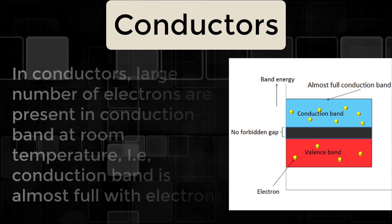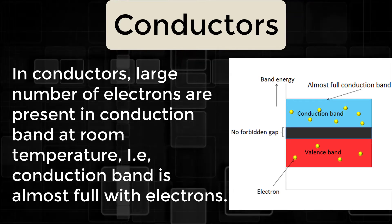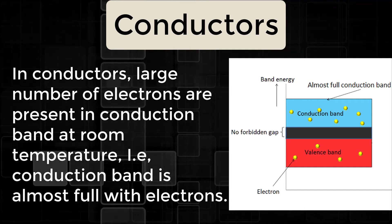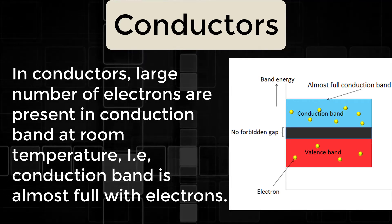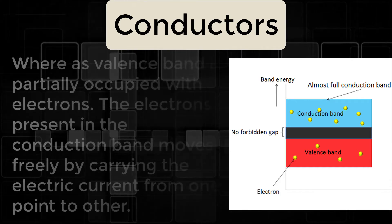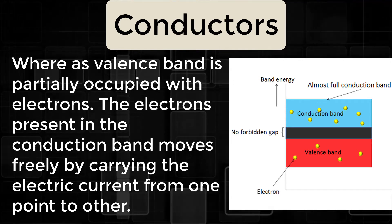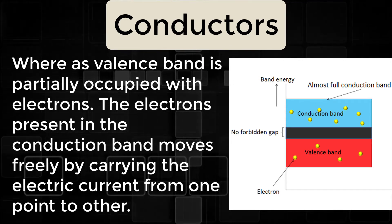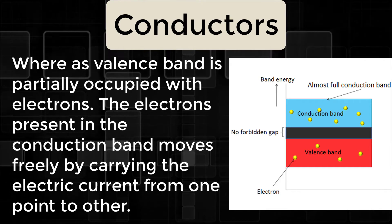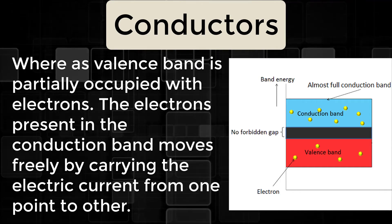In conductors, a large number of electrons are present in the conduction band at room temperature — that is, the conduction band is almost full with electrons. Whereas the valence band is practically occupied with electrons. The electrons present in the conduction band move freely, carrying electric current from one point to another.